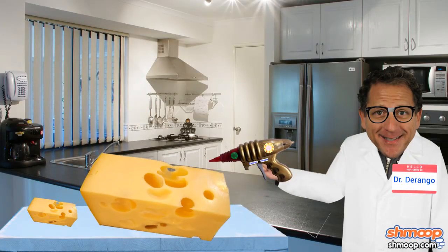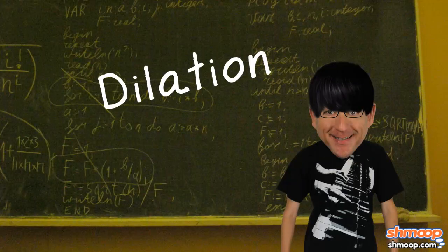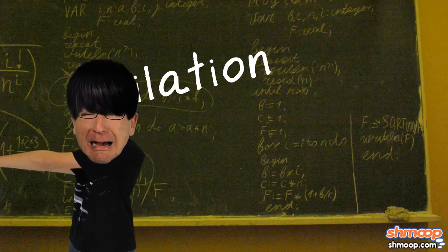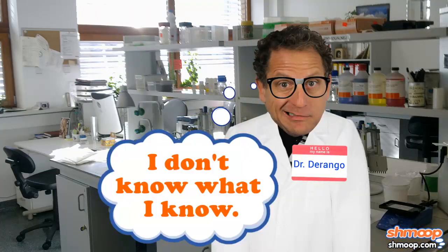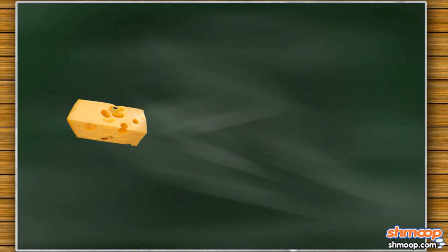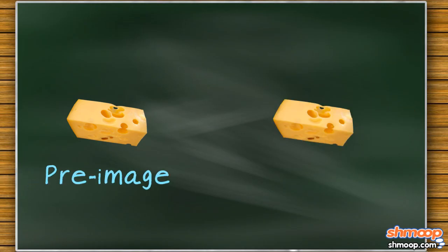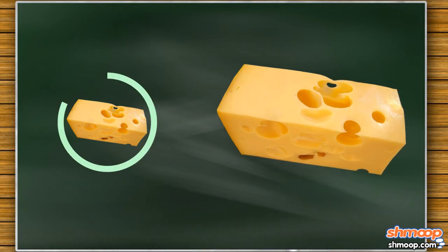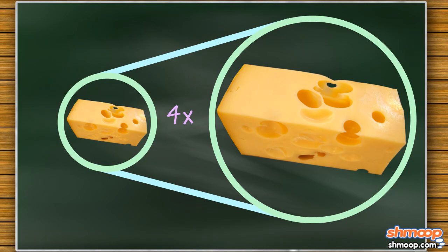Within moments, a second, much larger wedge appears behind the first. The doctor is glad that all of his extensive dilation knowledge he picked up in high school hasn't gone to waste. He knows that this is a perfect example of the phenomenon. In this instance, his ray gun acts as the center of dilation. The original wedge of cheese represents the pre-image, and the secondary wedge represents the image. Because there's a scale factor of four, the dimensions of the new wedge are all exactly four times greater than that of the original hunk-o-cheese.